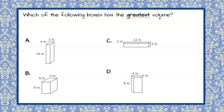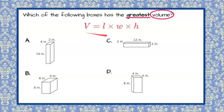Welcome back. We are being asked to find the greatest volume, identifying that each one of these is a right rectangular prism. Using our state reference sheet, the volume of a prism is length times width times height. I'm going to find the volume of each of the four answer choices to determine which one has the greatest volume.